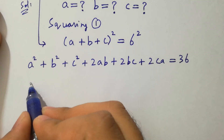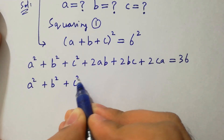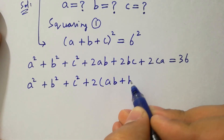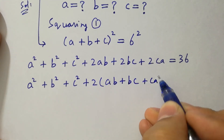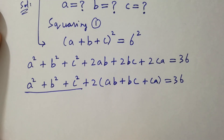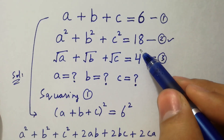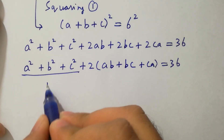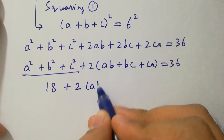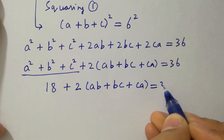We have a squared plus b squared plus c squared, and taking 2 as common it will be 2(ab plus bc plus ca) equal to 36. Recall the second equation: a squared plus b squared plus c squared equals 18. It will be 18 plus 2(ab plus bc plus ca) equal to 36.